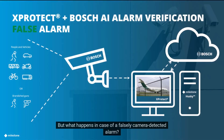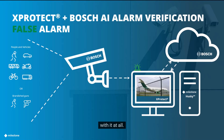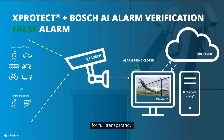But what happens in case of a falsely camera detected alarm? In that case, the provisional alarm in XProtect will be closed, so that the operator will not be bothered with it at all. Instead, the provisional alarm will be closed immediately and neatly logged in XProtect alarm manager for full transparency.